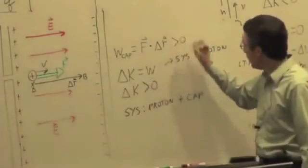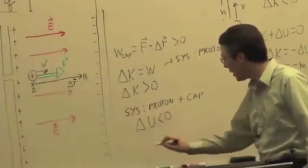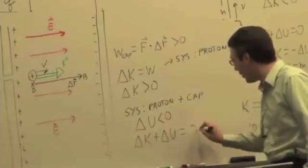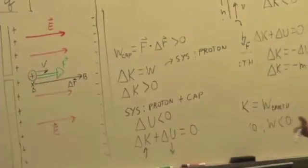So if the work is greater than zero in this case, the change in potential energy is less than zero in this case, right? So delta K plus delta U equals zero. If the kinetic energy increases, the potential energy has got to decrease, okay?